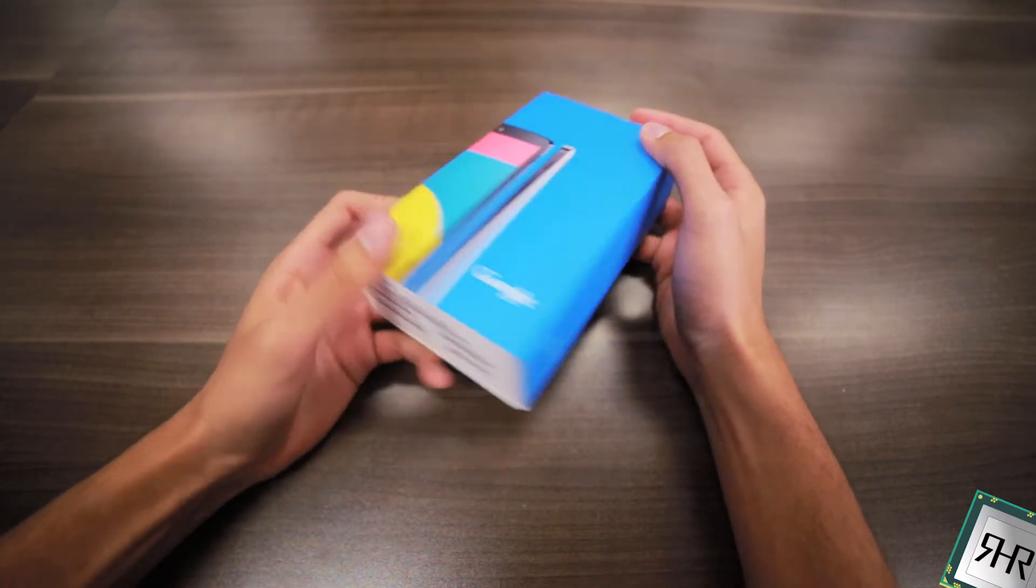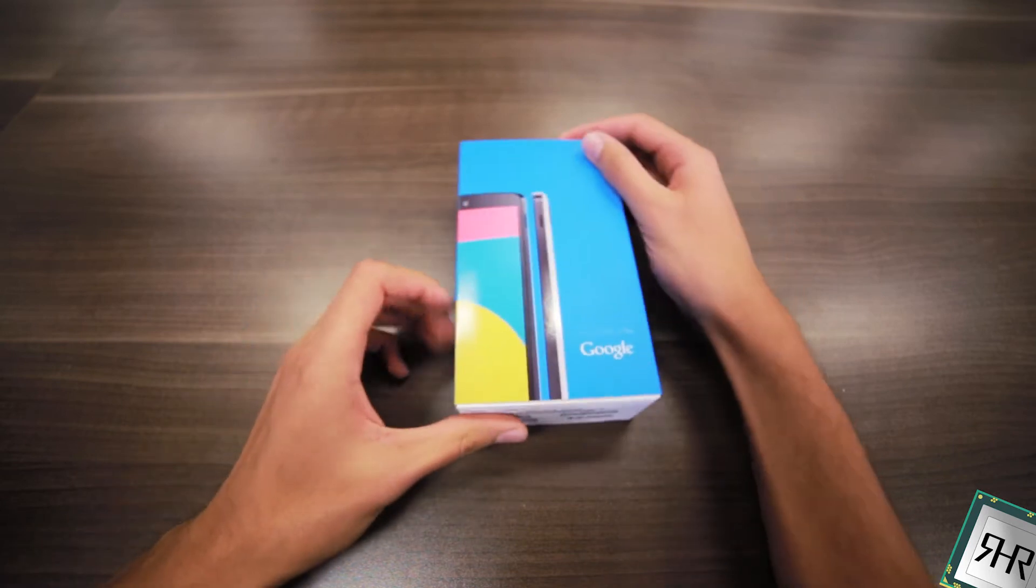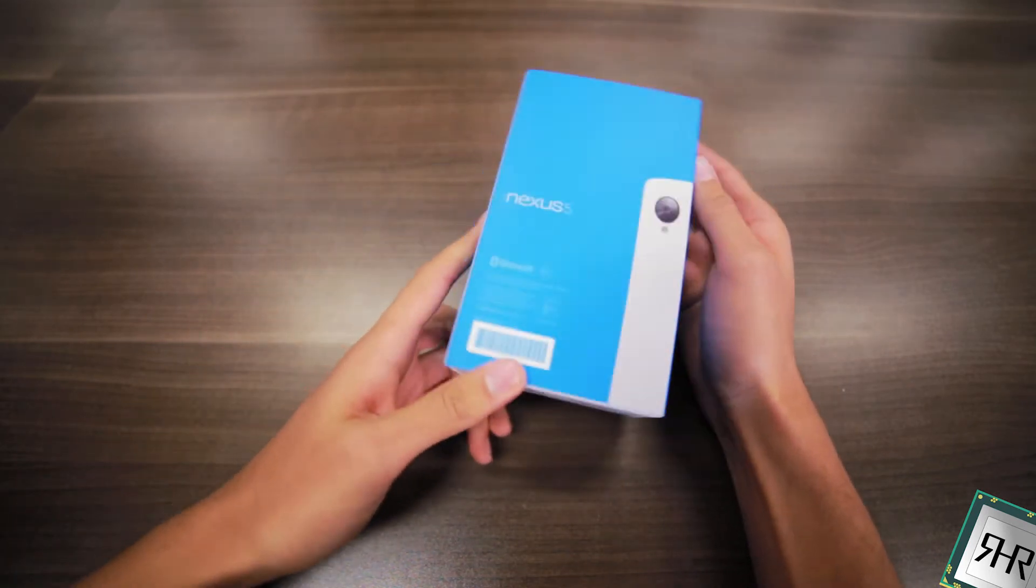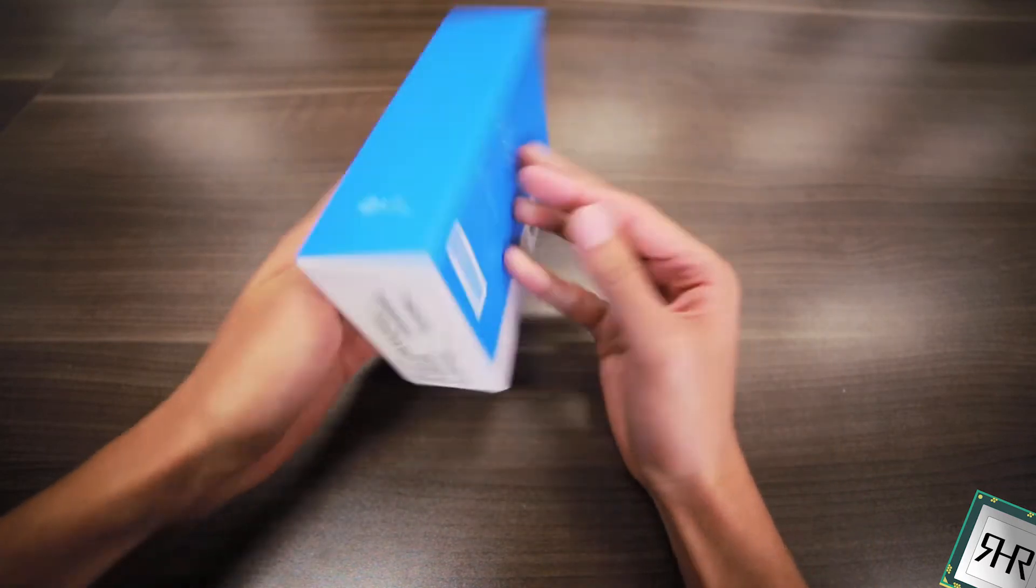Right here I got the white version of the phone and from the packaging itself it looks fairly simple. Nice little blue highlights everywhere and it's the white version.